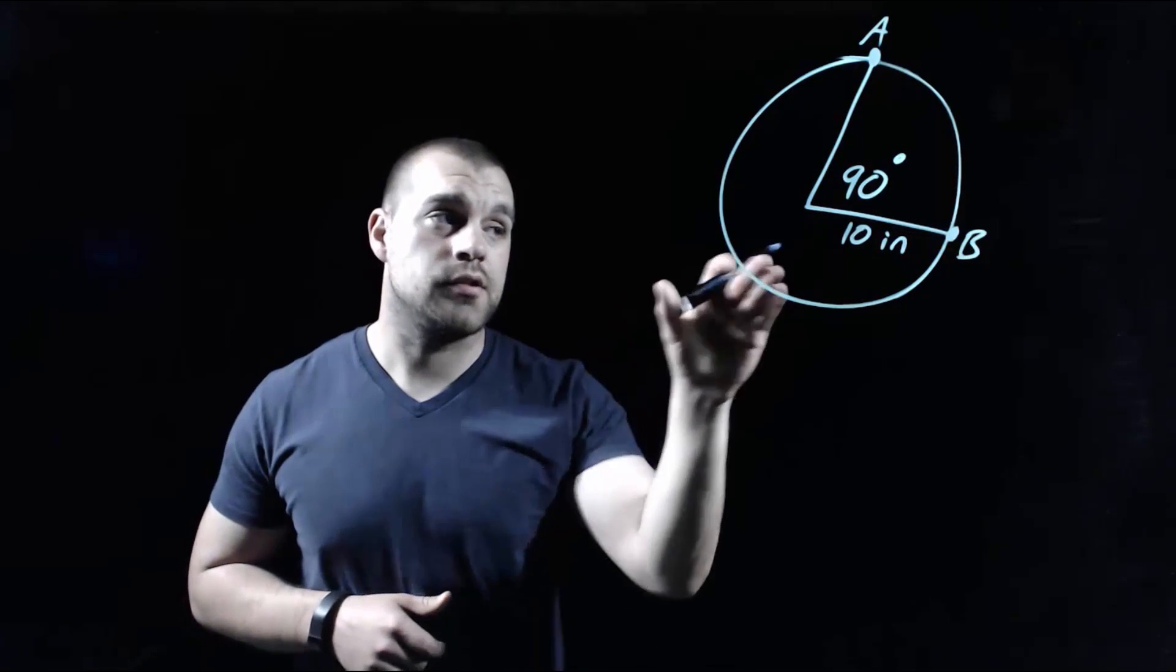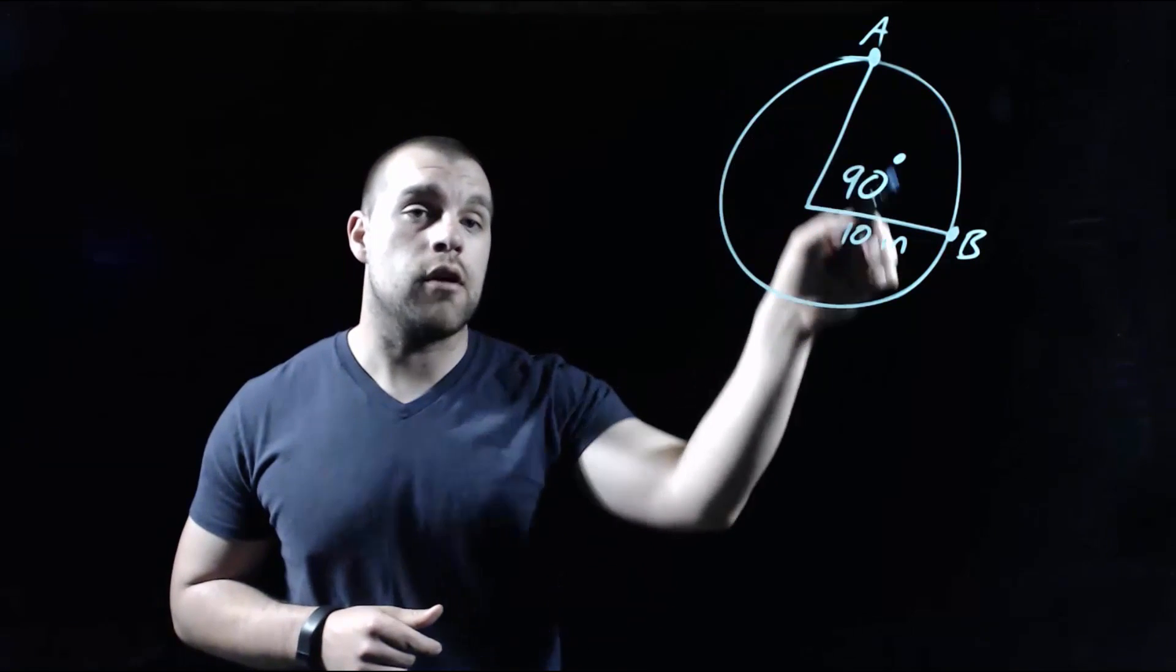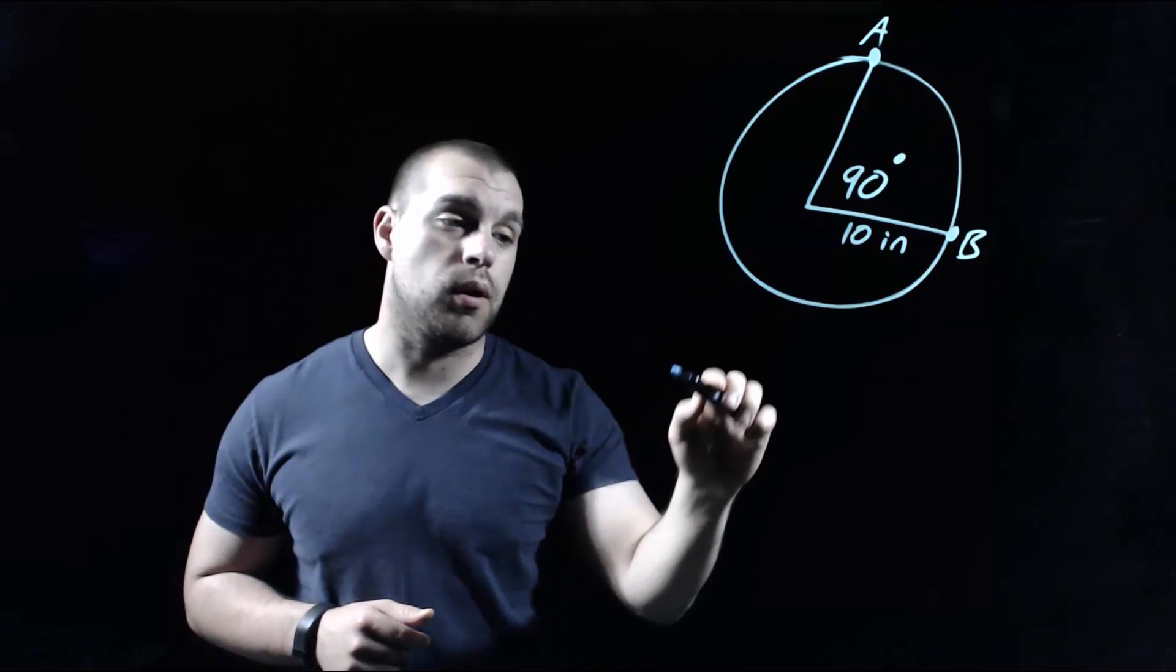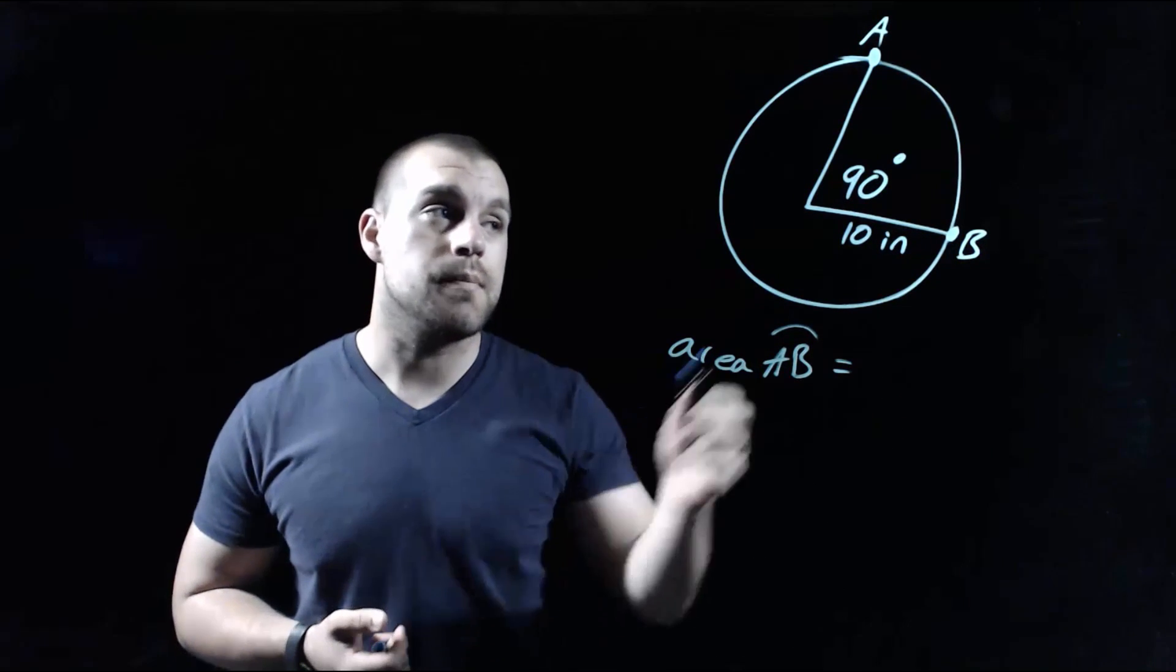In this example, we've got a circle with a 10-inch radius, and we're given a 90-degree central angle. Again, we're going to find the area of the sector that runs from point A to point B. In order to do that, we need to know the measure of the arc that runs from A to B.